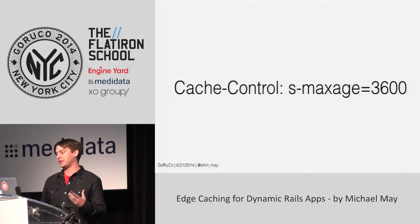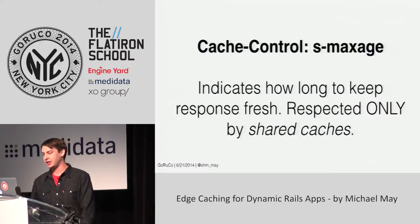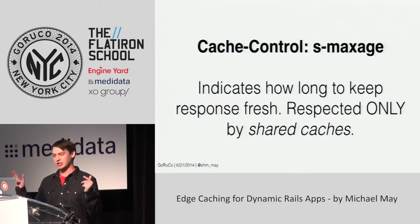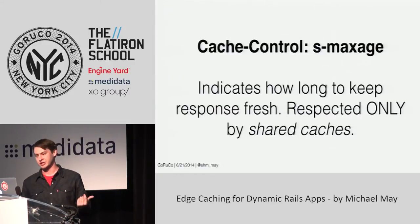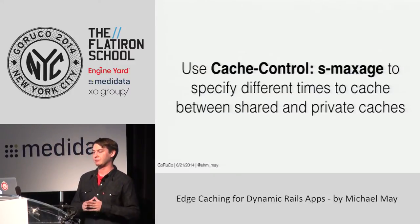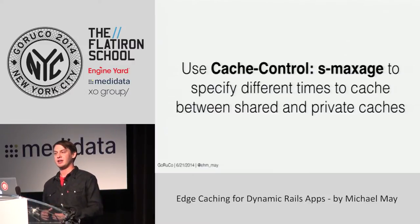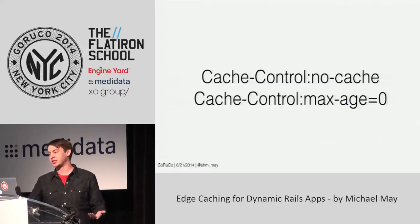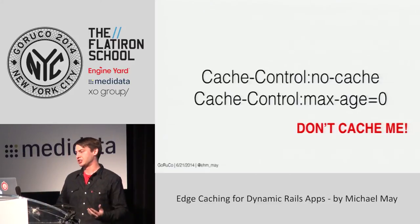There's also another directive called s-maxage, which is a little less known. s-maxage indicates how long to keep a response fresh — i.e., cached — and this is only respected by shared caches, so browsers won't honor this. This is really useful if you want to set different cache lengths for your CDN and your browser. You can also specify for things not to be cached using no-cache, or by setting max-age to zero.